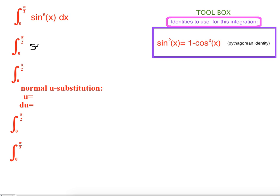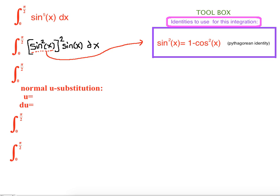Since sin⁵(x) has an odd power, we break it into an even part times sin(x): sin²(x)² · sin(x) dx. Note that sin²(x)² equals sin⁴(x), so sin⁴(x) · sin(x) = sin⁵(x). Our next step is to substitute sin²(x) using the identity: sin²(x) = 1 − cos²(x). We substitute that in: (1 − cos²(x))² · sin(x) dx.